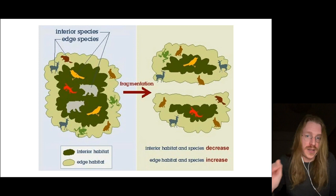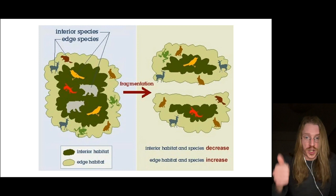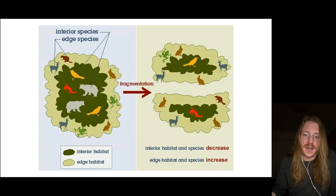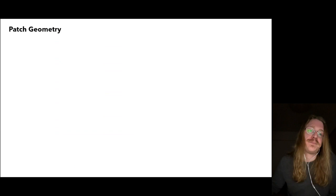You can have edge effects without an ecotone. Just think about the edge of an agricultural field — there's a sharp jump from forest to grassland or whatever the neighboring habitat type is. There's no transitional band with this high degree of juxtaposition; there's no ecotone in that situation.